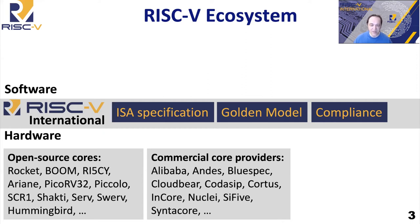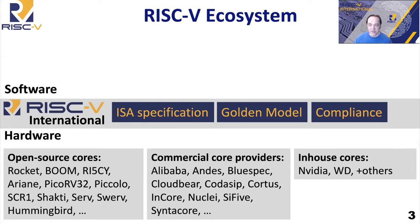There's a big variety of open source cores available from different places all around the world. As well as open source cores, there are also commercially licensed cores — cores that you have to pay to use, but they come with companies who develop, verify, and support them. What's incredible right now is there are so many commercial core providers from different places around the world. At this point, RISC-V really has more commercial IP providers than any other ISA ever in history. Additionally, there are in-house developed cores — for example, Nvidia develops their own RISC-V cores that they use on their GPUs.